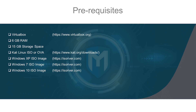Some prerequisites: VirtualBox — you can also use VMware, but for this course I'm going to recommend VirtualBox. Six gigabytes of RAM, fifteen gigabytes of storage space. We're going to be using Kali Linux. You can download the ISO or the virtual appliance. I'd rather import the virtual appliance — it's a little bit easier to set up and a little bit faster. Windows XP, Windows 7, and Windows 10, which is going to be optional.